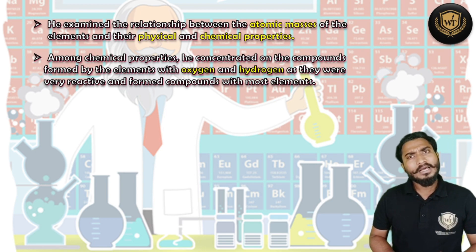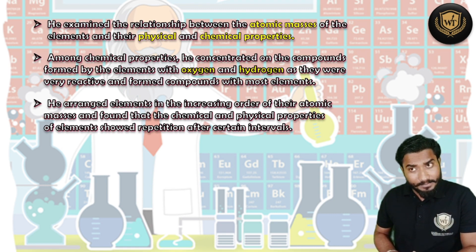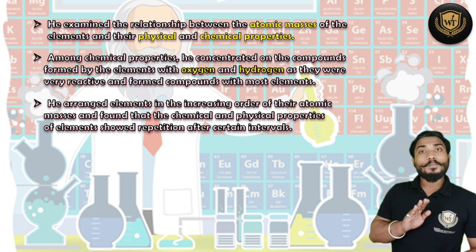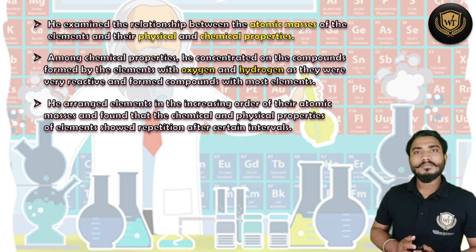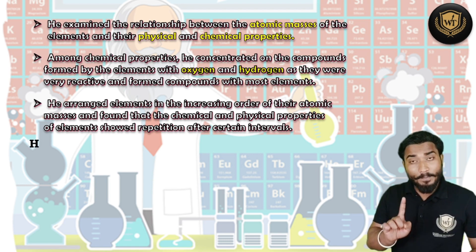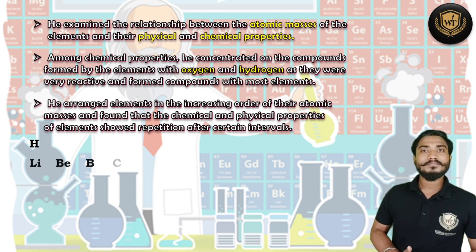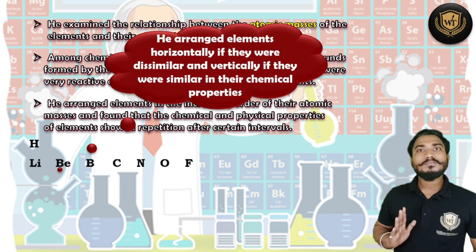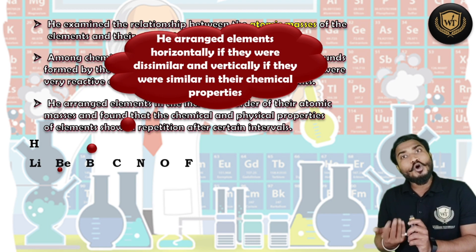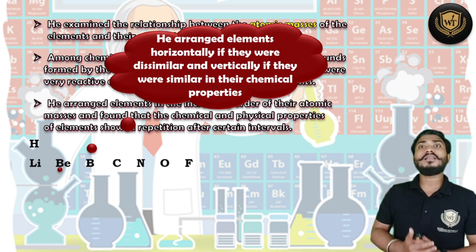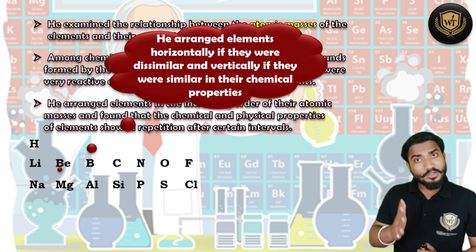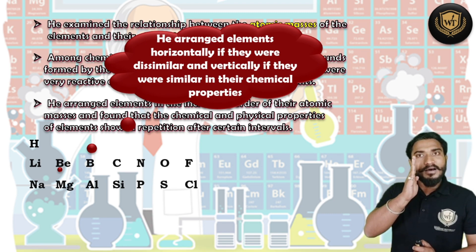After that he started arranging the elements. When he was arranging them, he found that these elements were similar to some other elements — that means properties of these elements were showing some repetition. But the repetition was not fixed. For example, hydrogen's properties were similar to lithium, but the interval between hydrogen and lithium was zero — lithium came directly after hydrogen. Properties of beryllium were not similar to lithium, nor boron to beryllium, nor carbon to boron. But sodium's properties were similar to lithium.